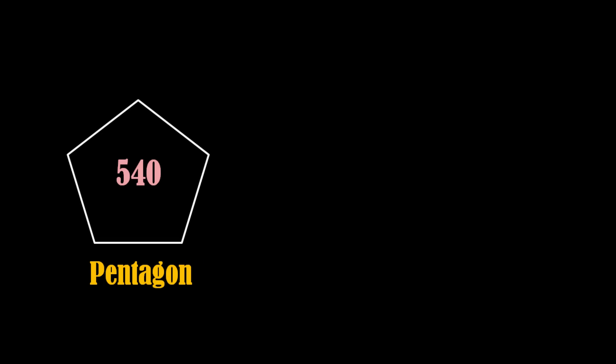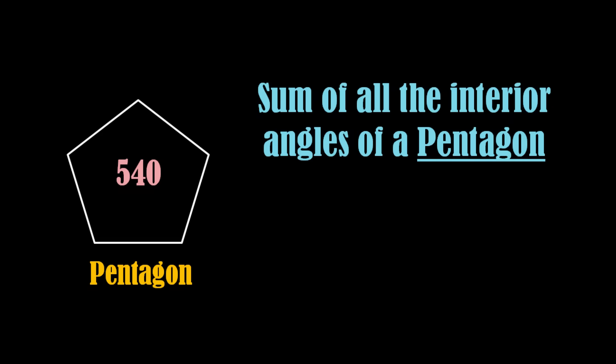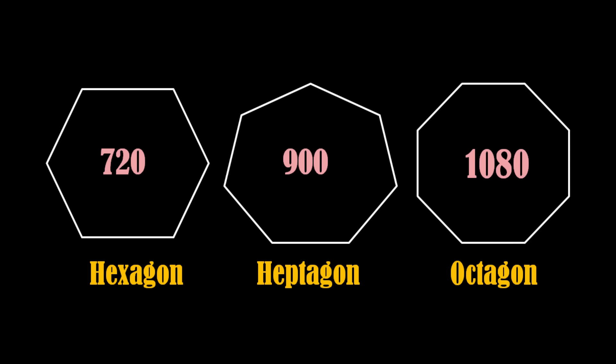Now we have a pentagon. Sum of all the interior angles of a pentagon is 540 degrees which also adds up to 9. We get the same digital root 9 on repeating the same process for hexagon, heptagon and octagon.